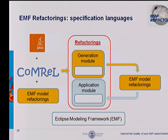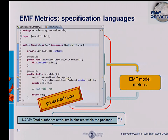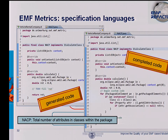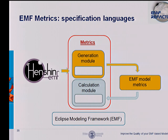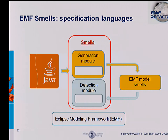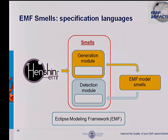The last mode for specifying refactorings is using a dedicated language called Comrel — Composite Model Refactoring Language — in combination with Java, for combining model refactorings into more complex ones. For metrics, you can use Java code — for example, this is the code generated by the generation module using JET, and you have to fill in the gap, in this case the total number of attributes and classes within the package. You can use OCL for metrics calculations, or use existing metrics and combine them together. You can also specify a metric using a pattern formulated in Henshin on the abstract syntax of your model and count the matches found in the model. For smells, you can use Java code, OCL for metric-based smells with existing metrics, or Henshin patterns which can be searched and found on the model.